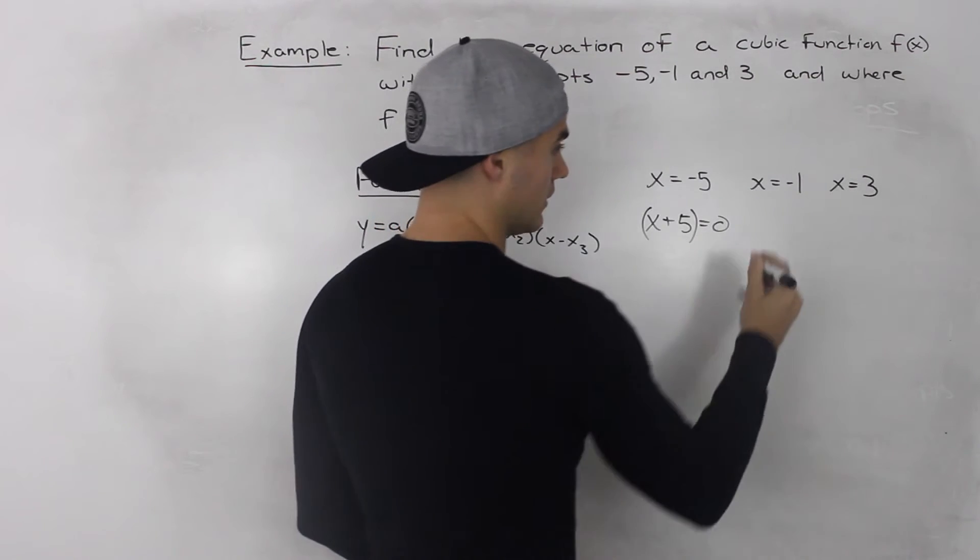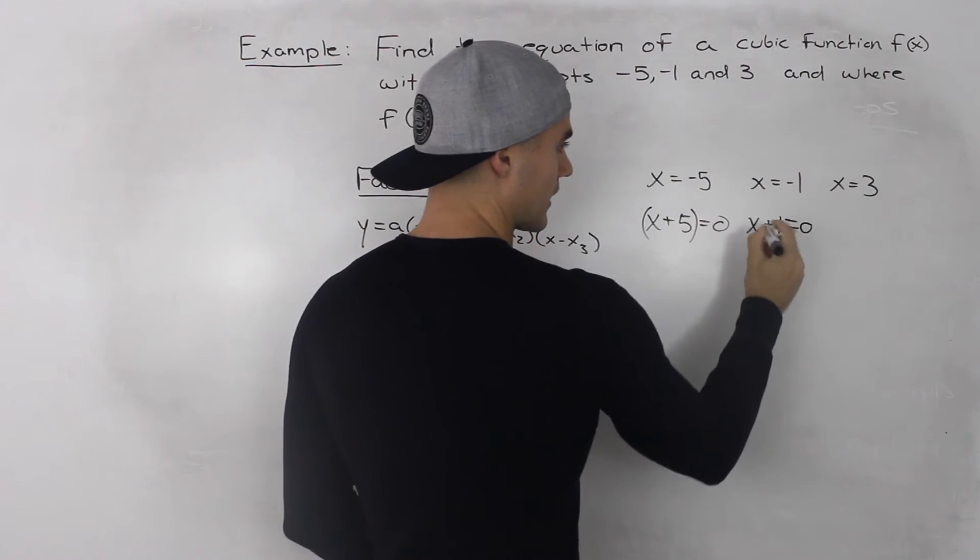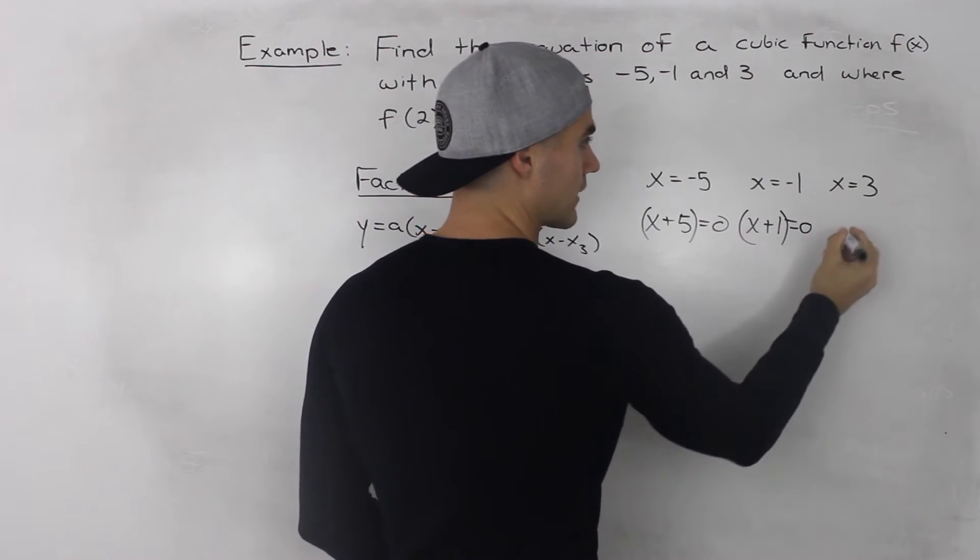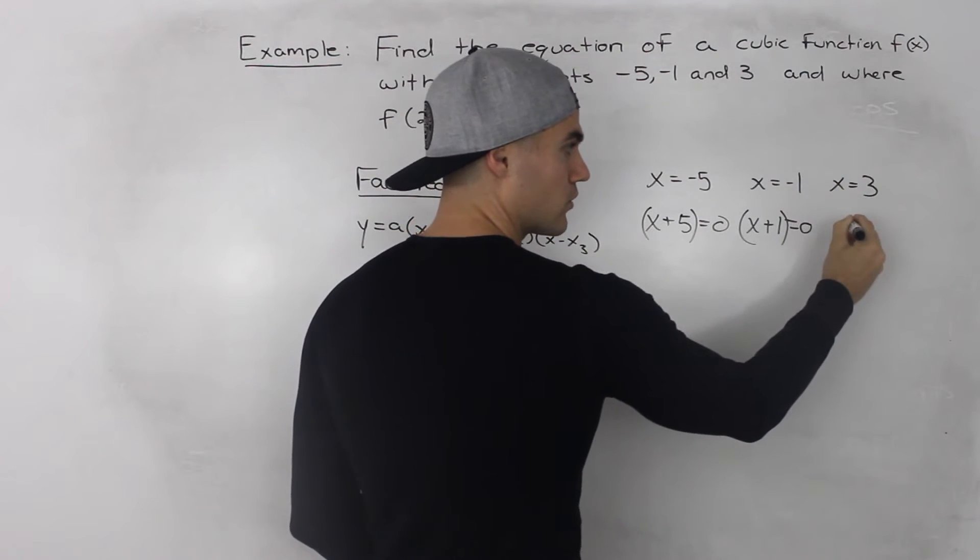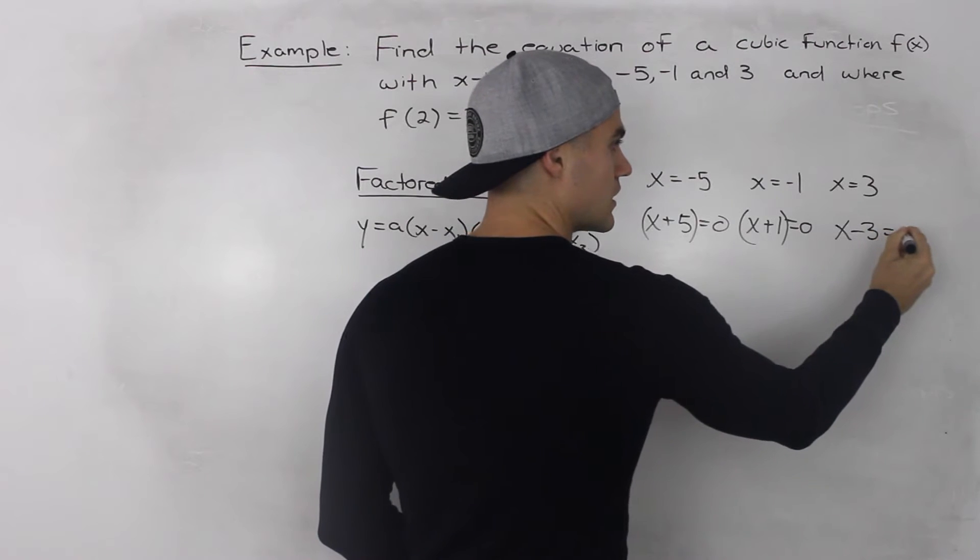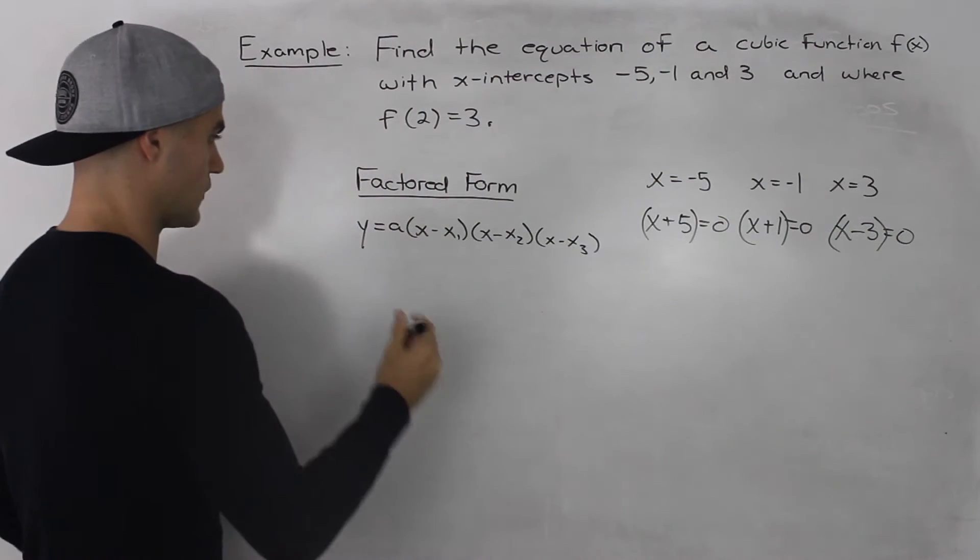So x = -1. That's the same as x + 1 = 0 if we bring the -1 over. So that's another bracket. And then x = 3. When we bring the 3 over, we'd have x - 3 = 0. So that's the other bracket. So let's fill those in.